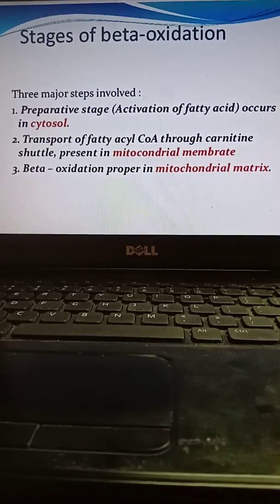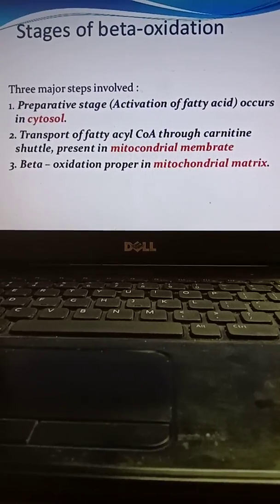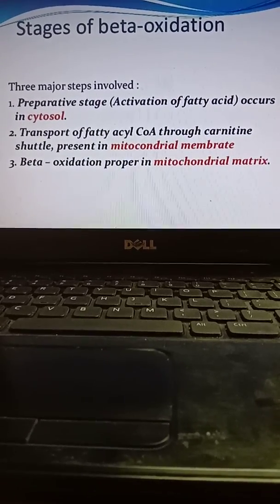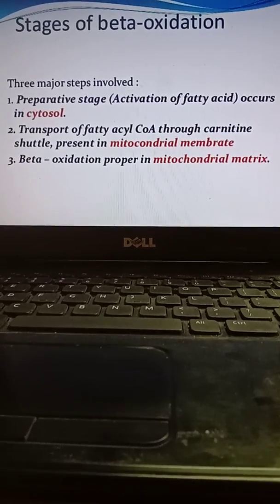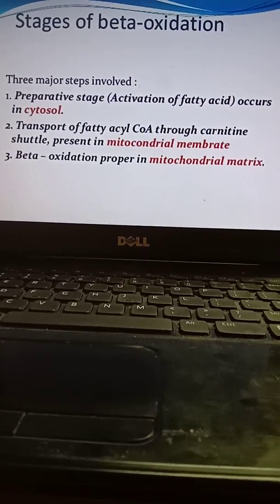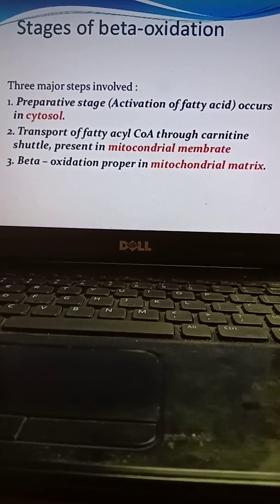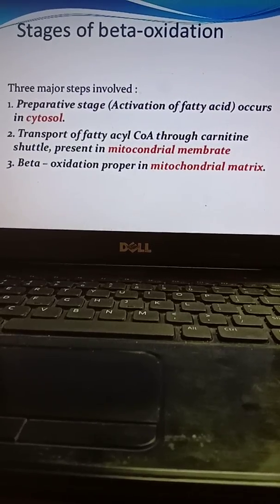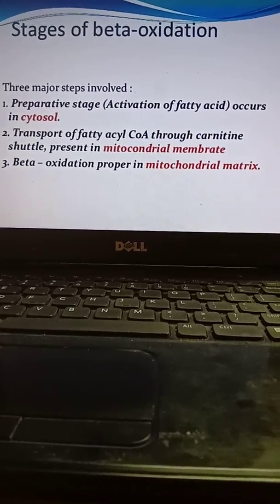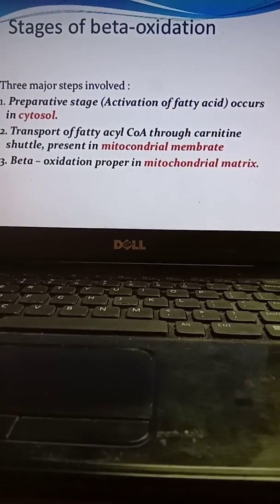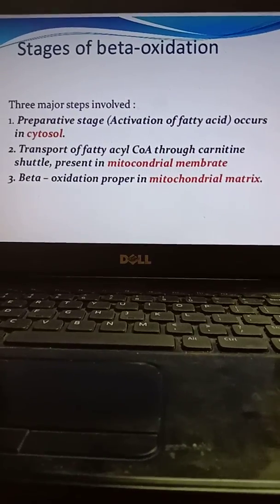The carnitine shuttle will be transferring the acyl-CoA to the mitochondria. Third stage is beta oxidation proper in the mitochondrial matrix. So the three stages are: activation in the cytosol, transfer of fatty acyl-CoA via the carnitine shuttle, and then maximum work occurring in the mitochondria.